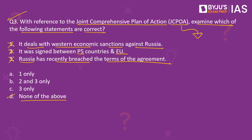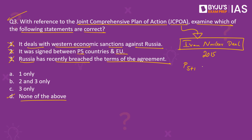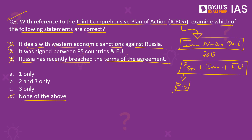JCPOA, or the Joint Comprehensive Plan of Action, is also referred to as the Iran nuclear deal. This deal was signed in 2015 between the P5+1 countries, Iran, and the European Union. Here, P5+1 includes the five permanent members of the UN Security Council — the US, Russia, China, UK, and France — and the plus one refers to Germany, which played the role of a key mediator in negotiating the Iran nuclear deal. Of course, Iran is also a party to the agreement along with the European Union.